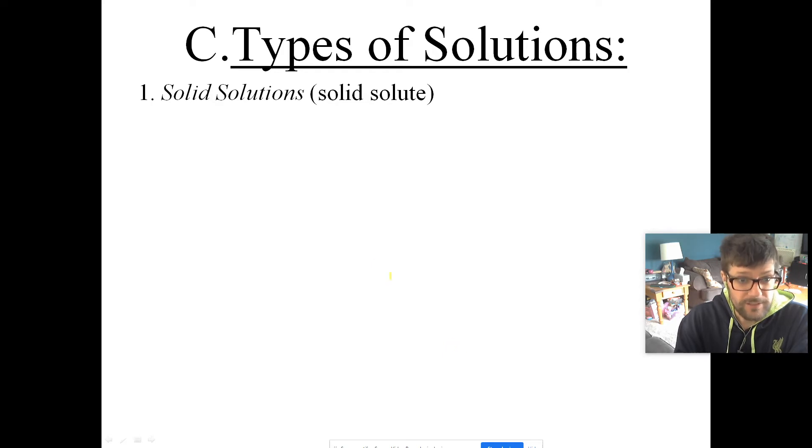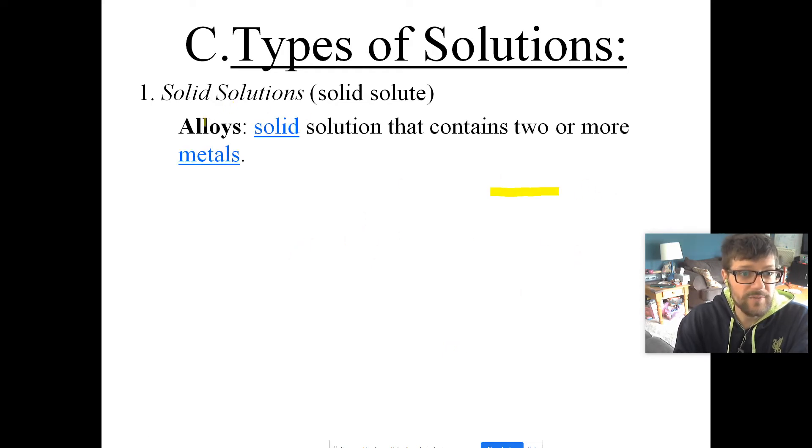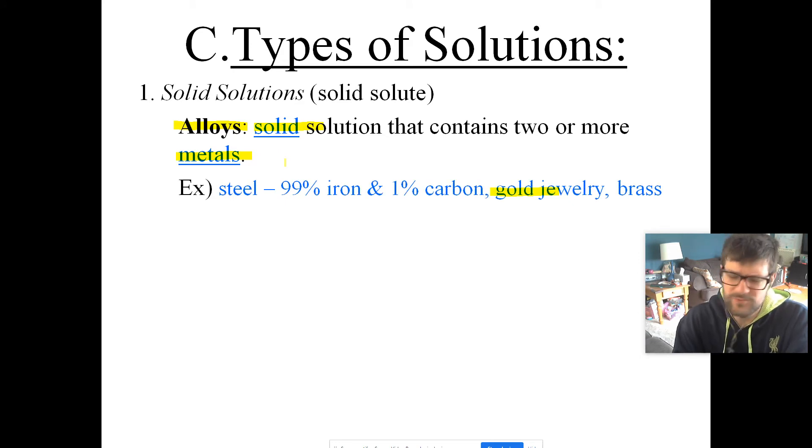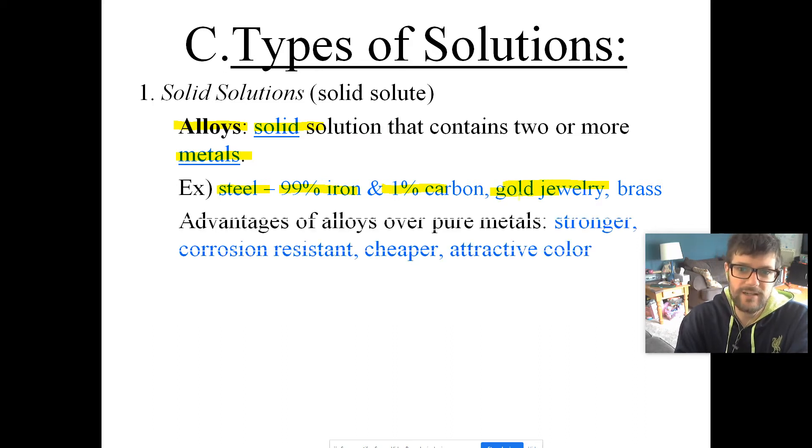We've got different types of solutions. We can have solid solutions, and we talked about these at the beginning of the year. Alloys. An alloy is a solid solution that contains two or more metals. We usually say two or more metals, but the reality is it's two or more solids, and one of them's pretty much always a metal. For example, steel is made of mostly iron but then a little bit of carbon. Most jewelry that you buy that's gold is not pure gold. It usually has alloyed in other elements. Brass is also a mixture. Alloys usually have advantages over the pure metal counterparts. They tend to add things to make them stronger or make them corrosion-resistant, cheaper, attractive.